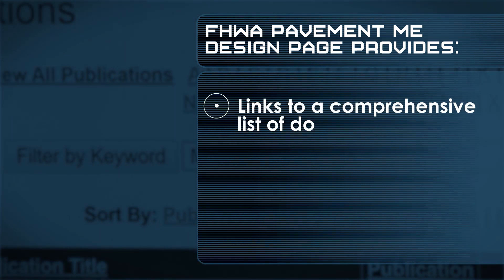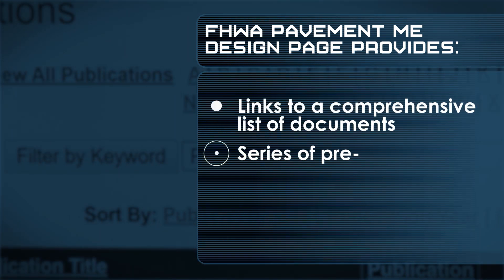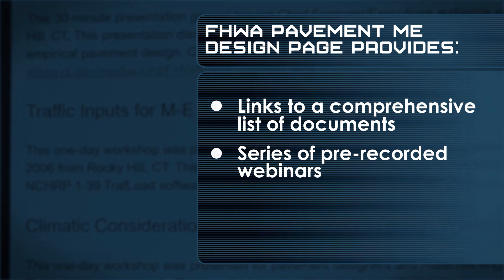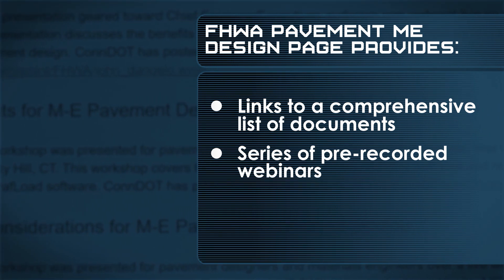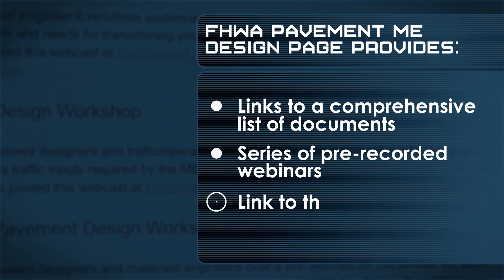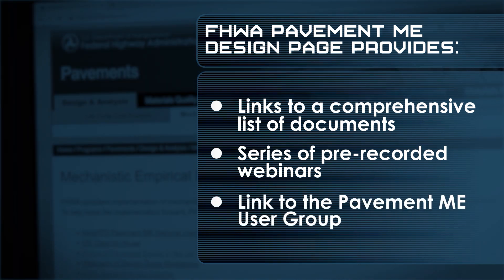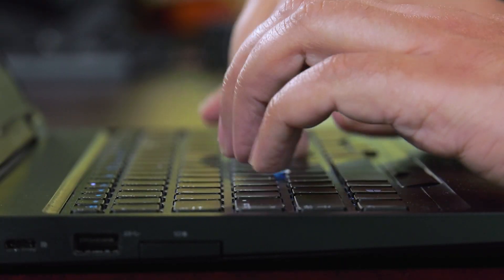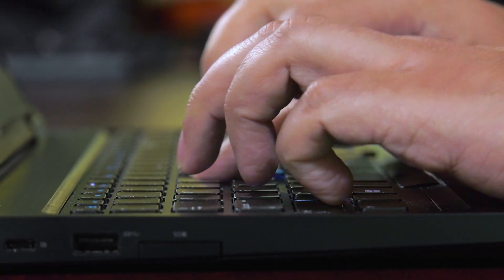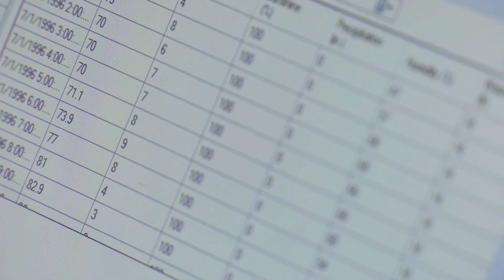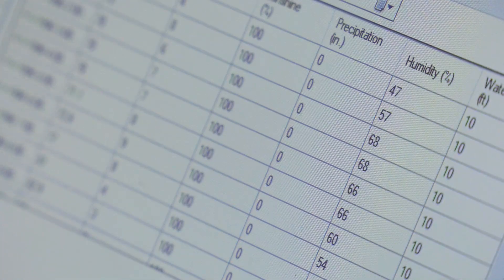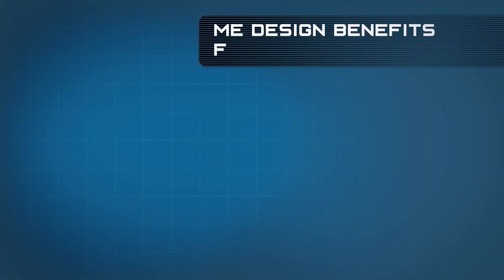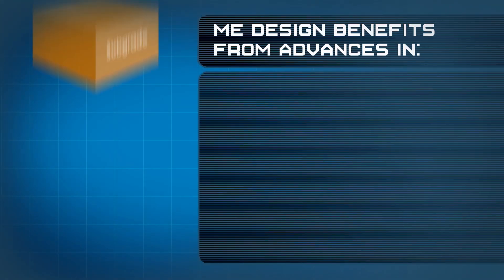The ME Design page on the FHWA Pavements website provides links to a comprehensive list of documents and a series of pre-recorded webinars covering a variety of topics associated with ME design, as well as a link to the Pavement ME user group website. ME design reflects a change in the methods and procedures engineers use to design pavement structures, taking advantage of advances in material mechanics, axle load spectra, and climate data.